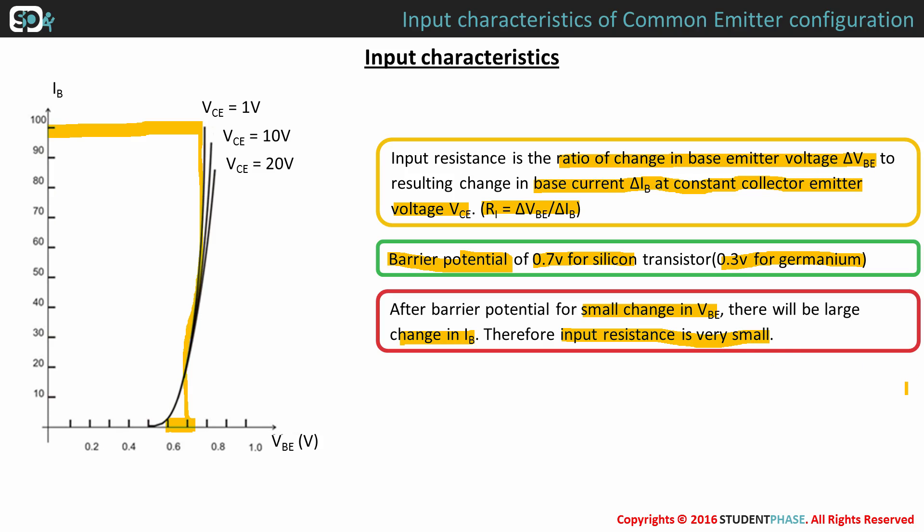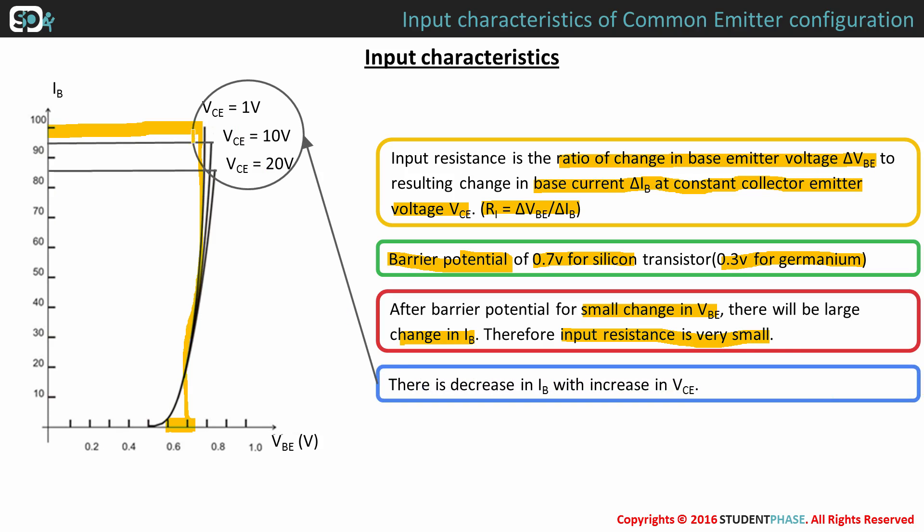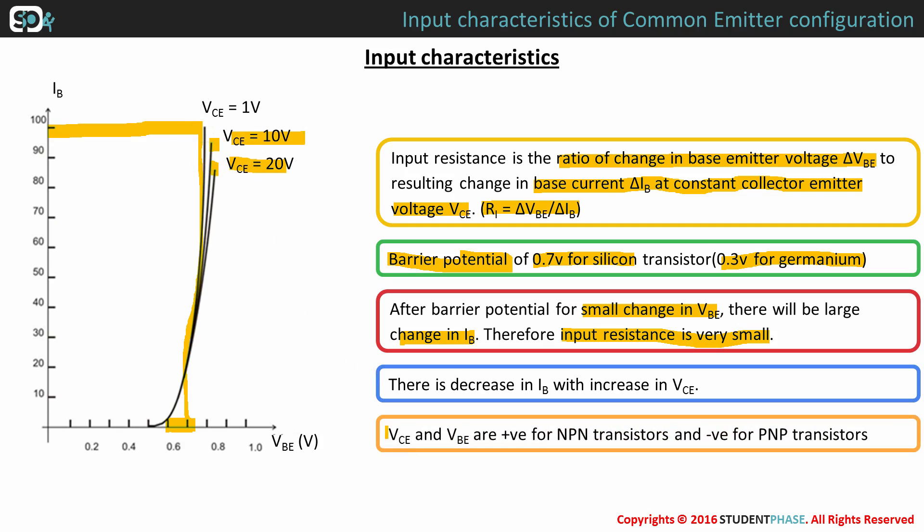Here, you can also observe that there is decrease in IB with increase in VCE. VCE and VBE are positive for NPN and negative for PNP transistors.